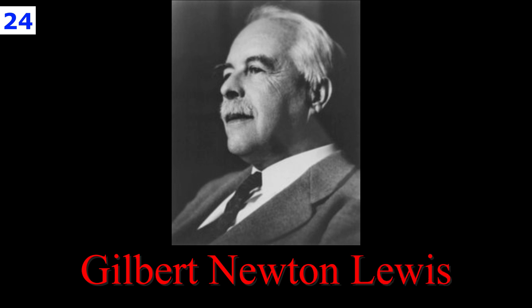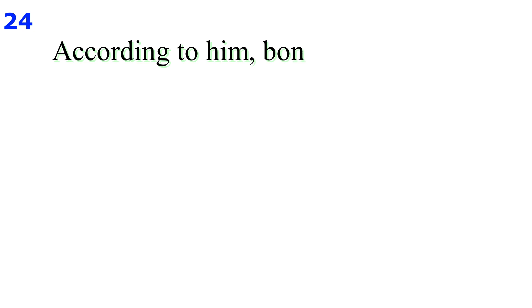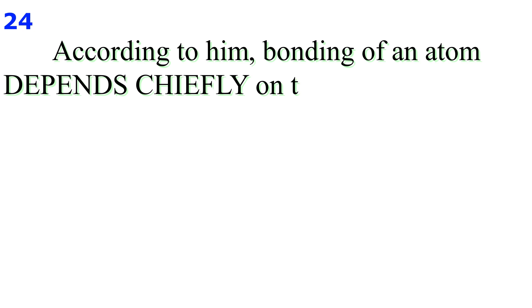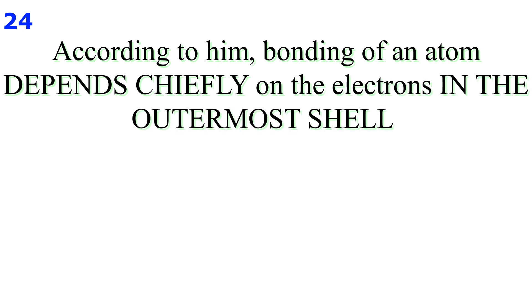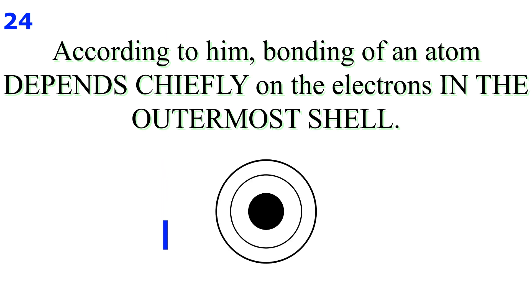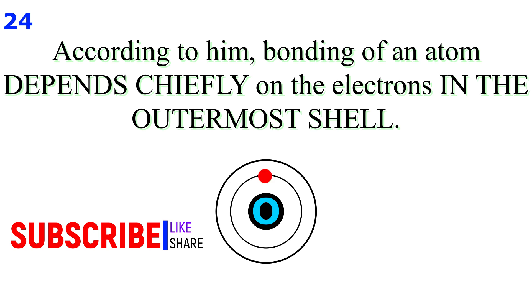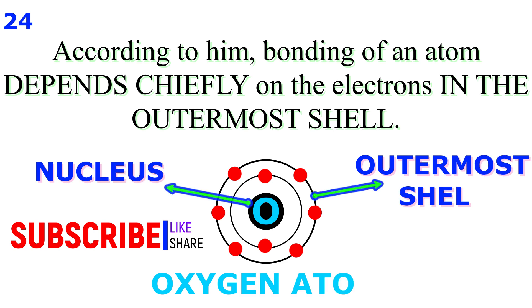In 1916, Gilbert Lewis put forth a comprehensive theory of bonding based on the electronic concept of the atom. According to him, bonding of an atom depends chiefly on the electrons in the outermost shell. Before we begin, if you get any value from this video, consider liking it and please subscribe to the channel to show your support.